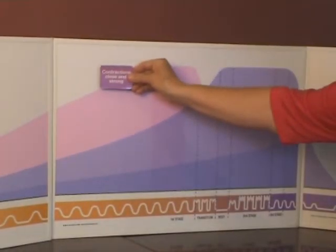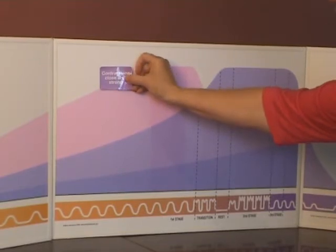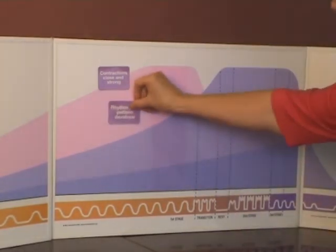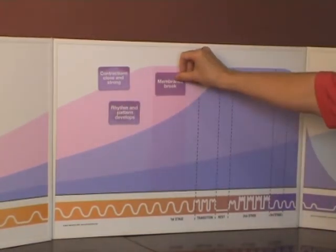The purple set of magnets explain what's happening physiologically: contractions close and strong, rhythm and pattern developing, membranes breaking.